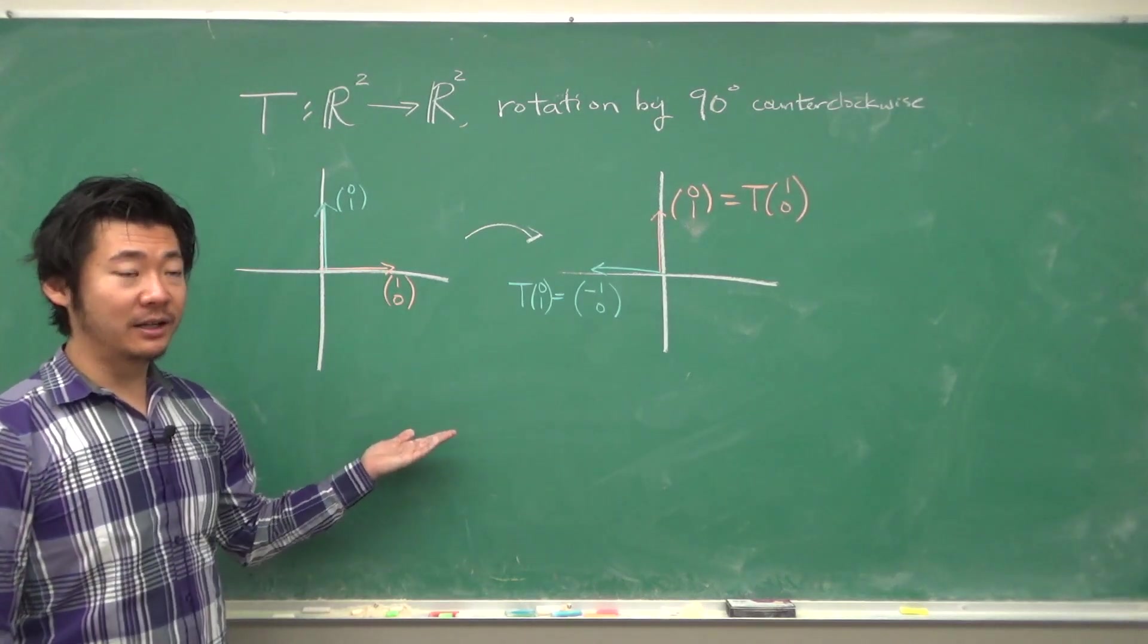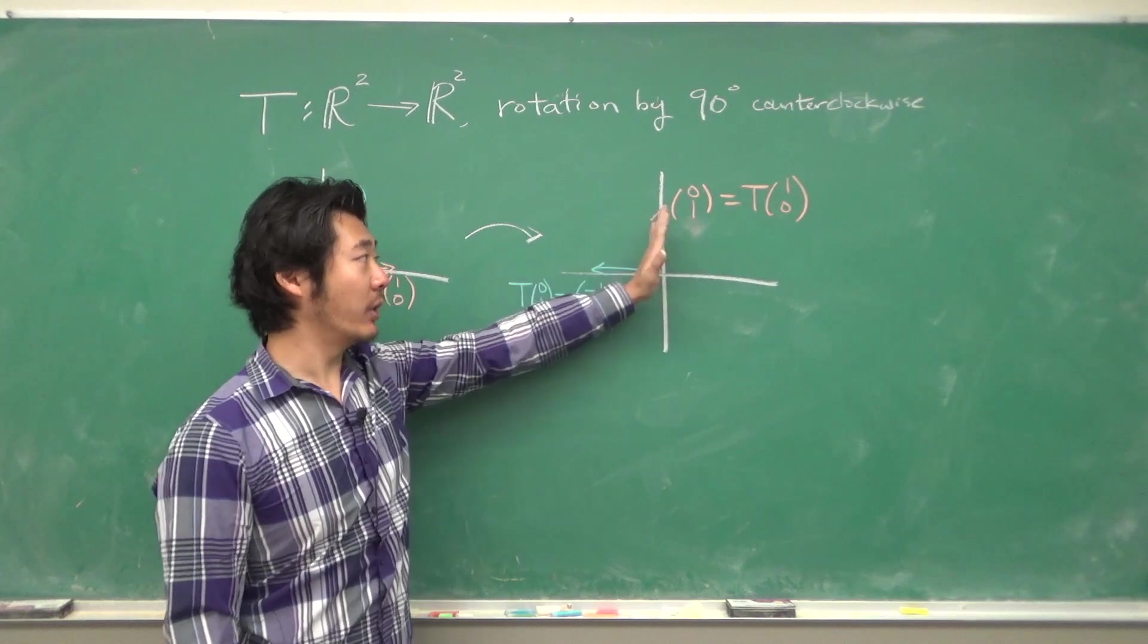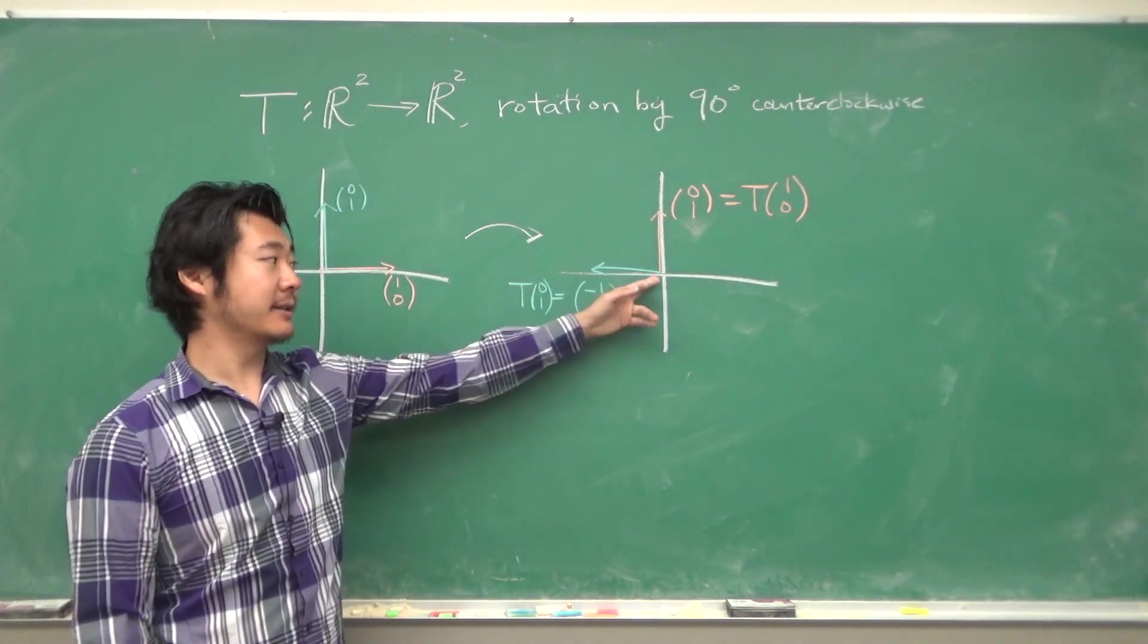After rotation by 90 degrees, we have T(1, 0) = (0, 1), and T(0, 1) = (-1, 0).